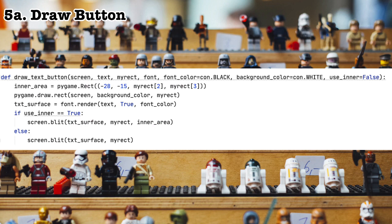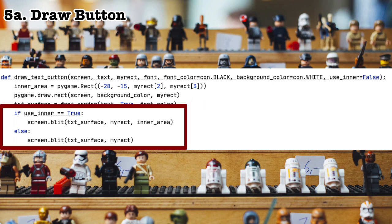All the work here is being done in the utility function, and you can see the code up there on the screen. Notice the line inner area equals pygame rect. This line returns us the inner area, and the inner area will come in useful if we want to center the text within the rectangle, and as it happens, I do. The next line, pygame draw rect, draws the rectangle with the selected background color, but we still have to render the text and draw it on the surface. So text surface, that contains the rendered text. Then if the boolean variable userinner is true, then we use the inner area, and if it's not, then we don't. Simple.